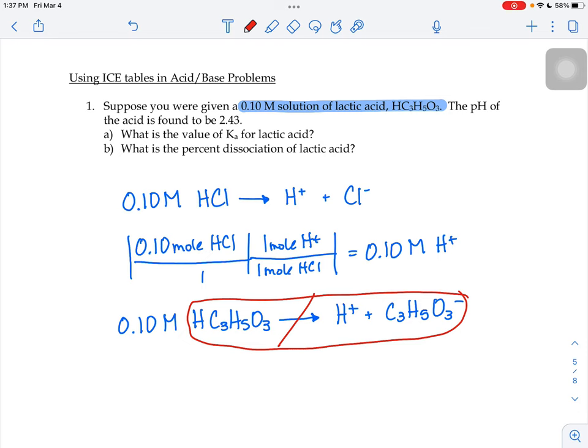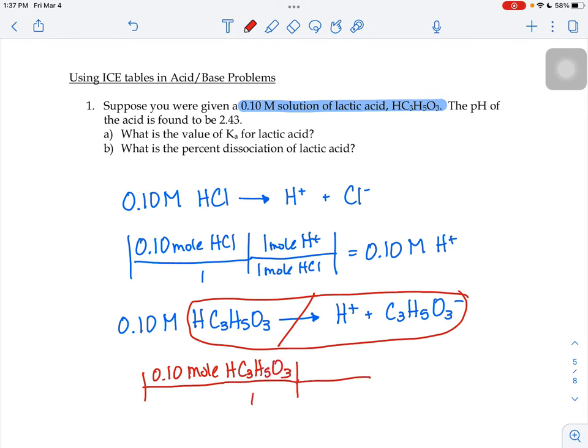So we cannot just say, because it's 0.1 moles of HC3H5O3, we cannot just say for every 1 mole of lactic acid that you have 1 mole of H+, because it does not dissociate 100%. So the molarity of the H+ here is not 0.1. So we're going to learn today how do we figure that out.